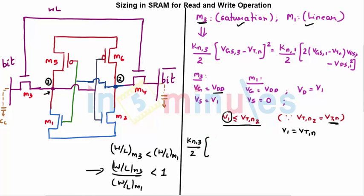Kn3 by 2, gate of M3 is Vdd, I have written here, you can check it from here as well. Vdd, source of M3 is nothing but V1. Vdd minus V1 minus Vtn, this completes my first term.